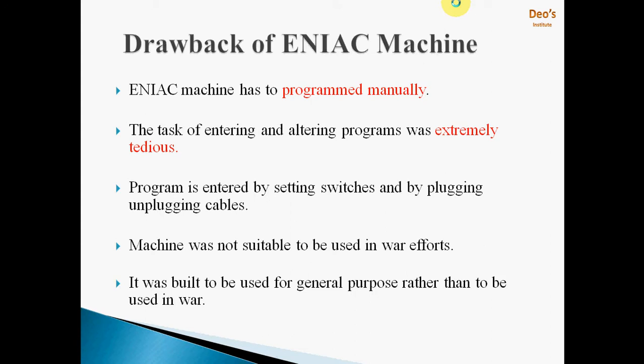Here are some drawbacks of the ENIAC machine. It had to be programmed manually — the task of entering and altering a program was extremely tedious as the program had to be entered through punch cards, by setting switches, and by plugging and unplugging cables, because this is all about turning vacuum tubes on and off. The machine was also not suitable for use in war effort because it was not fast enough, so it was used for general purposes instead.